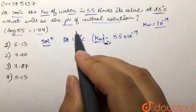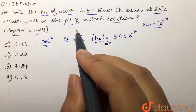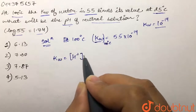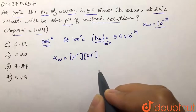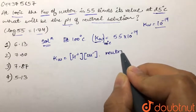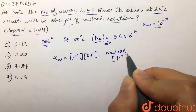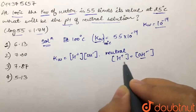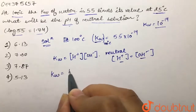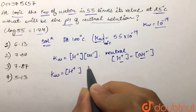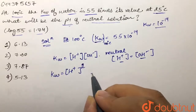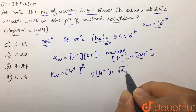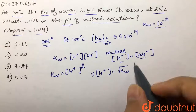Now we need to find pH, and for that we need the H⁺ ion concentration. We know that Kw equals [H⁺] multiplied by [OH⁻]. For a neutral solution, [H⁺] equals [OH⁻]. Substituting, Kw equals [H⁺] × [H⁺], which is [H⁺]². Therefore, [H⁺] equals the square root of Kw.